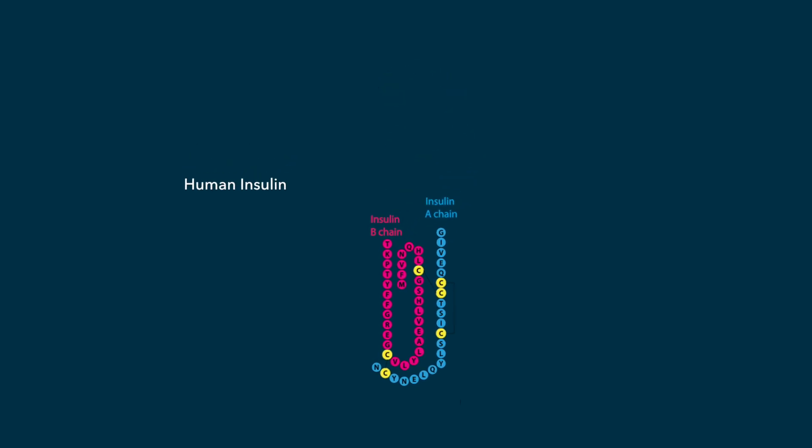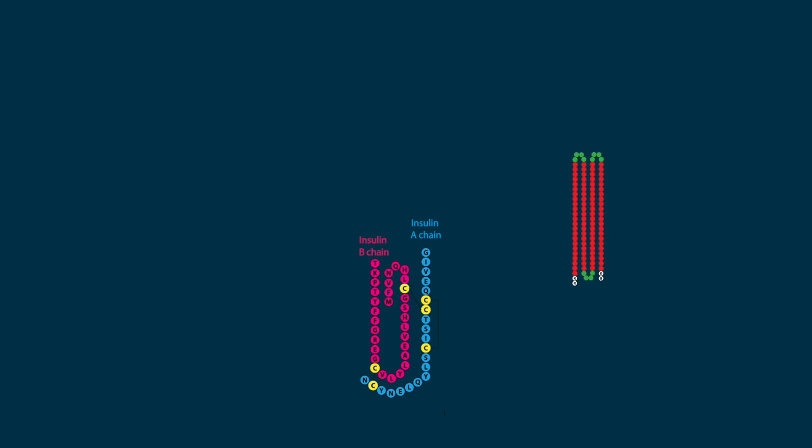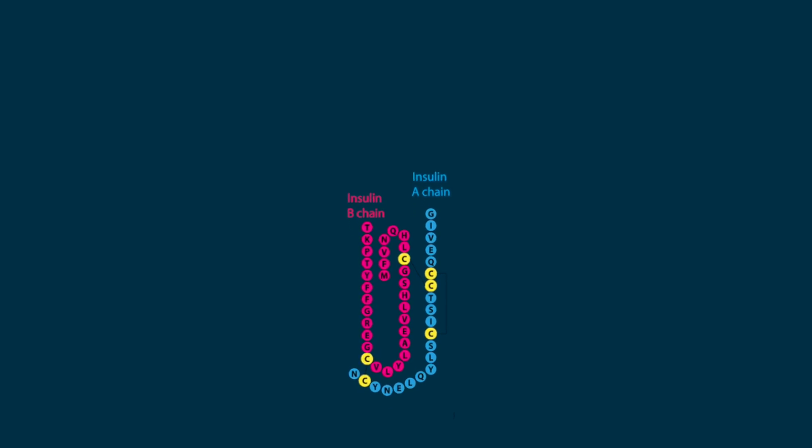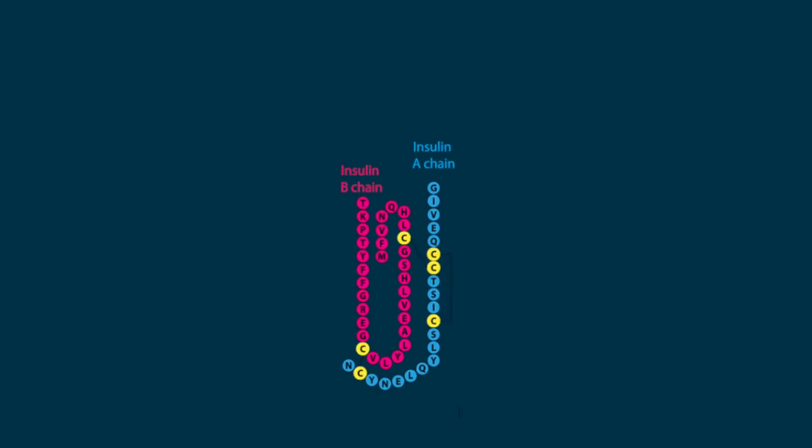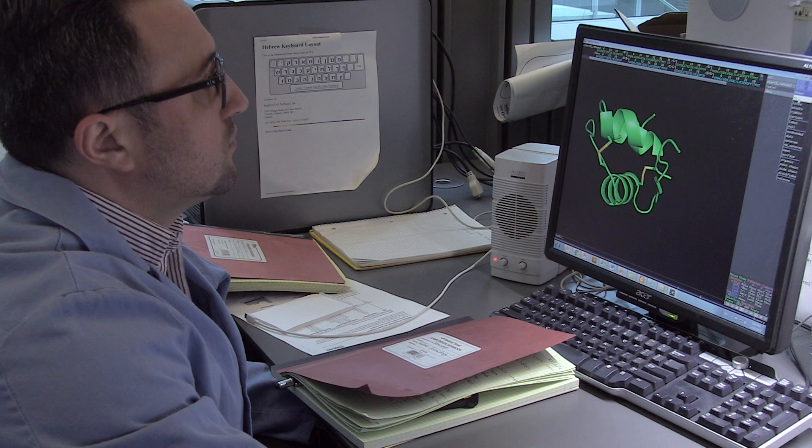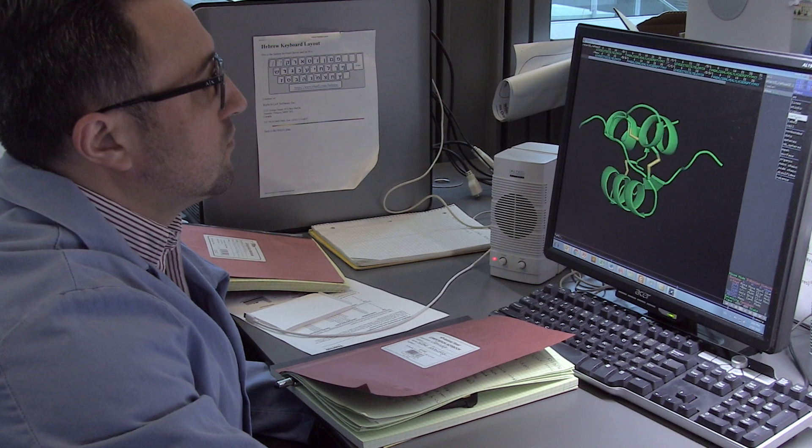What we've done that's truly novel here is we've taken one of our design proteins and we've used that protein sort of as a metal clamp, a molecular clamp that brings these two pieces together, pre-organizes them in the right orientation, thereby encouraging them to assemble appropriately. At the end of the day, we have the same insulin that your body would make.